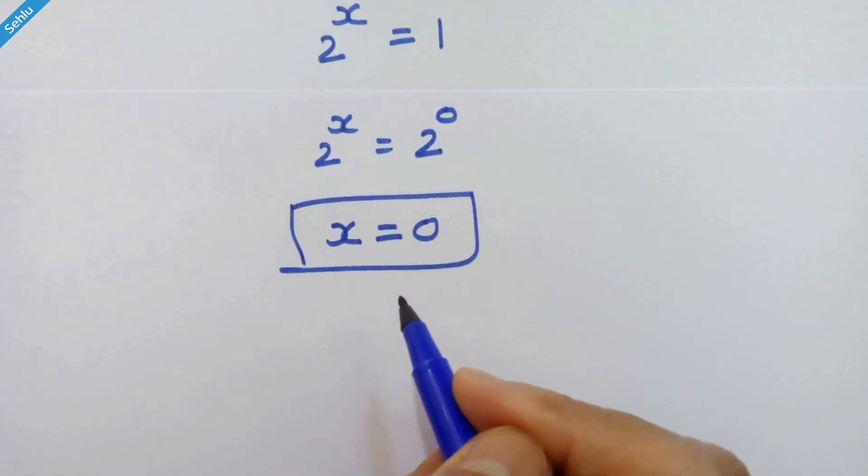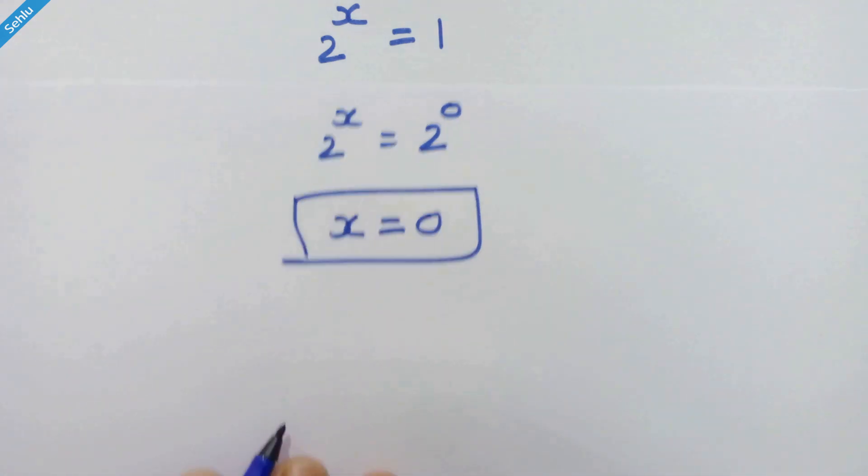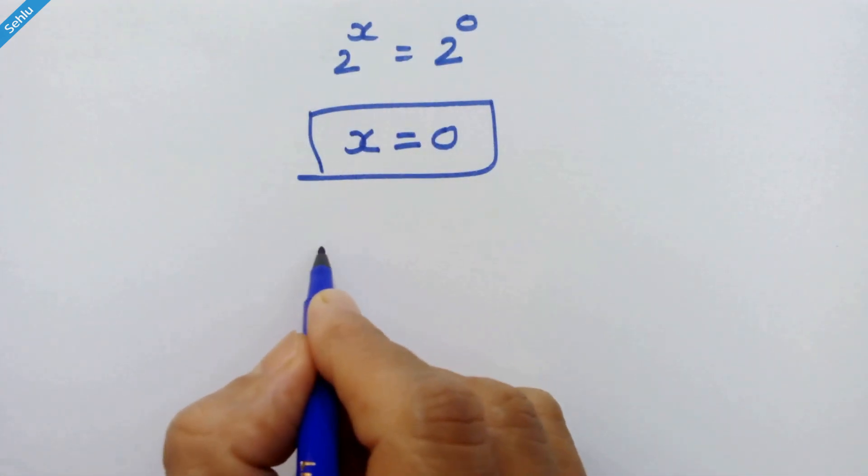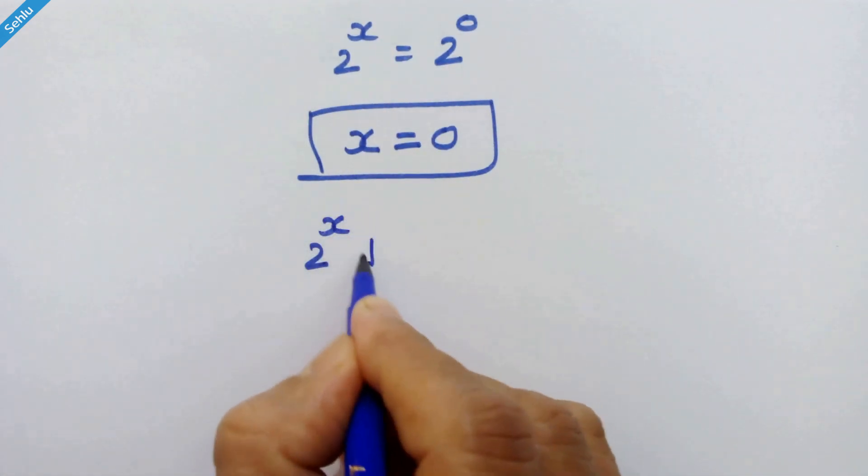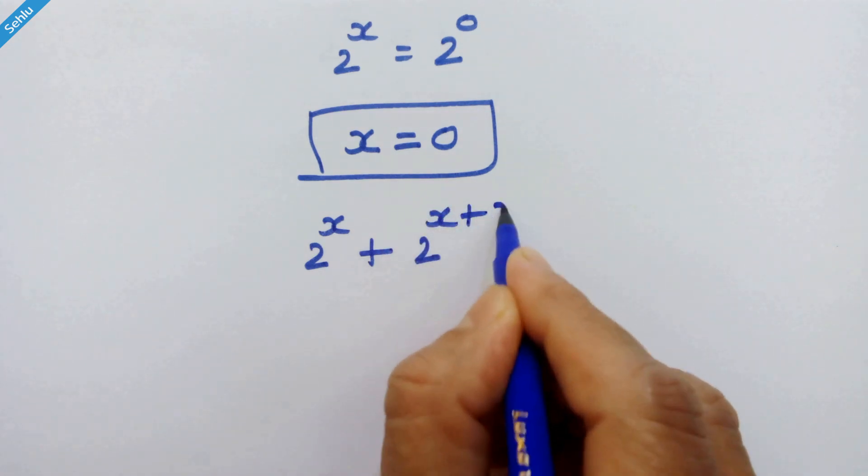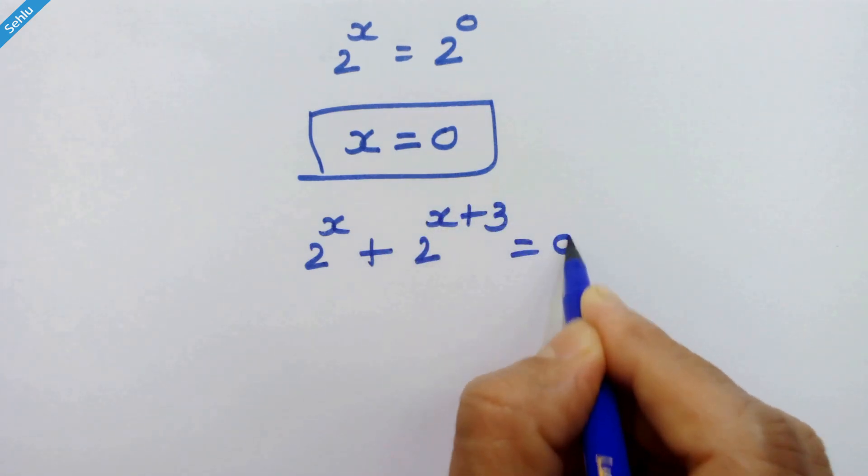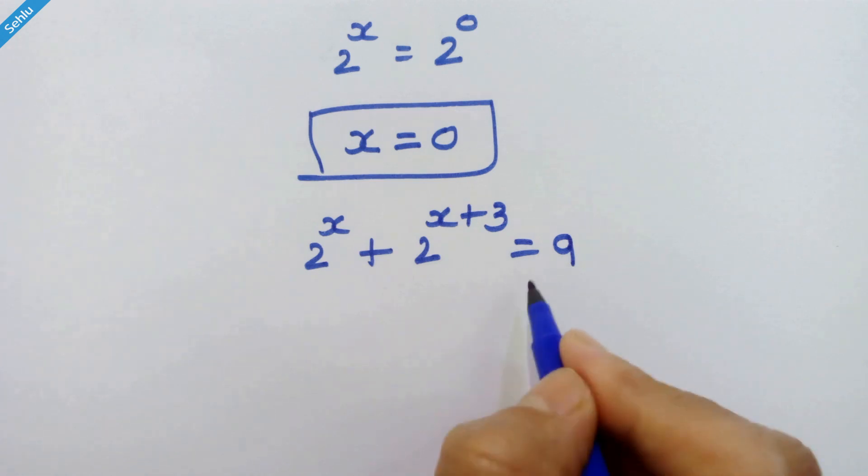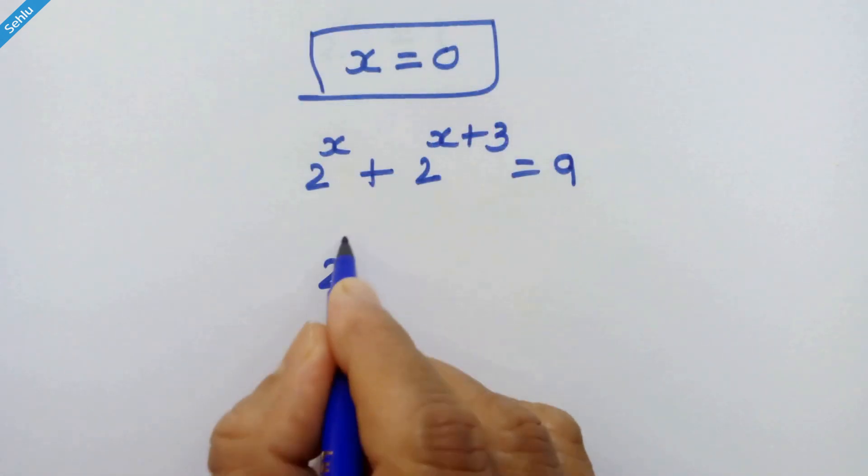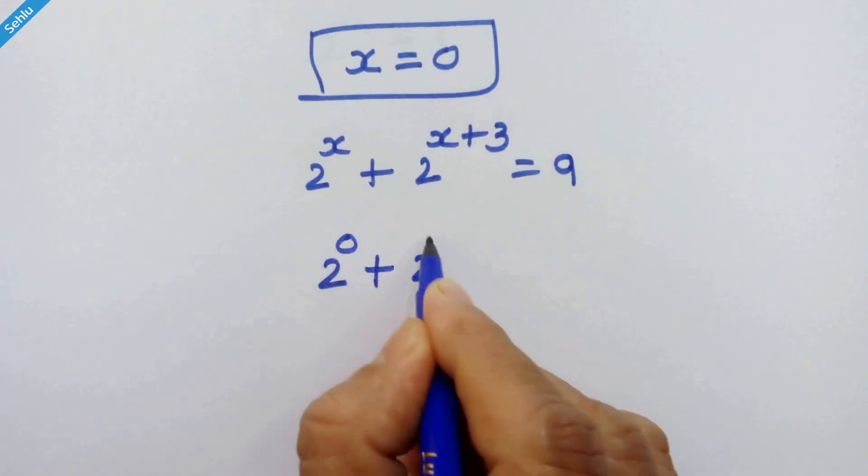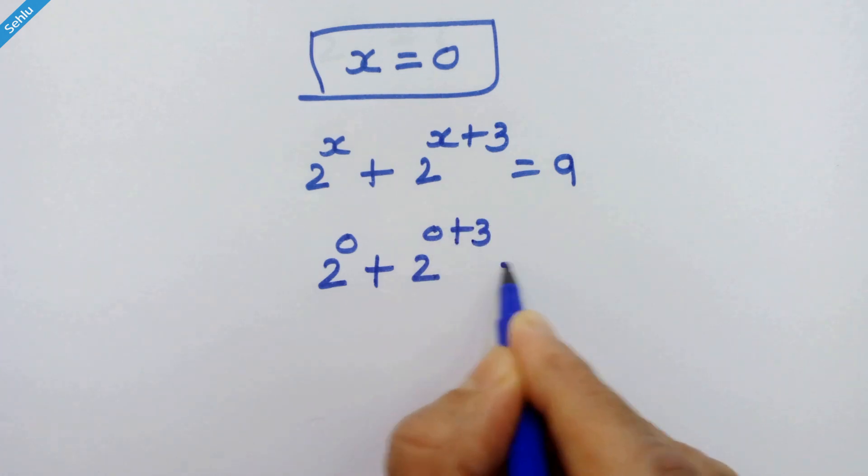Want to check it in main equation? Let's do that. Our main equation is 2 raised to x plus 2 raised to x plus 3 is equal to 9. Putting 0 in place of x, we have 2 raised to 0 plus 2 raised to 0 plus 3 is equal to 9.